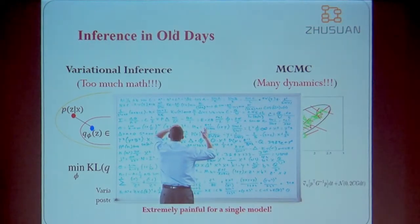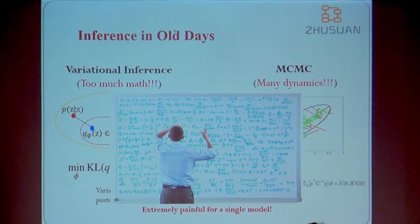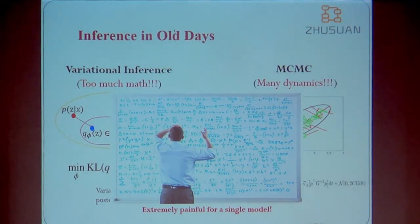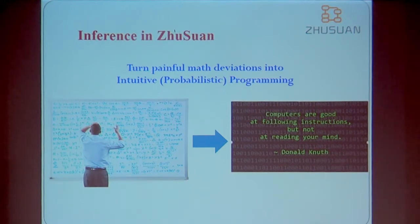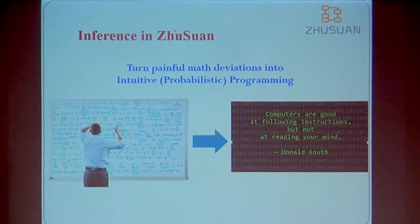In general, for a single deep generative model, we need to derive all the equations, check their correctness, and then implement all the details from scratch. This is very painful and can be very easy to get wrong. This motivated us to design a library to save time. The idea is that we try to turn the mathematical derivation into very intuitive programming. Because our target is probabilistic models, we call it probabilistic programming, which is a hot topic in machine learning — there is a workshop on it at NeurIPS.